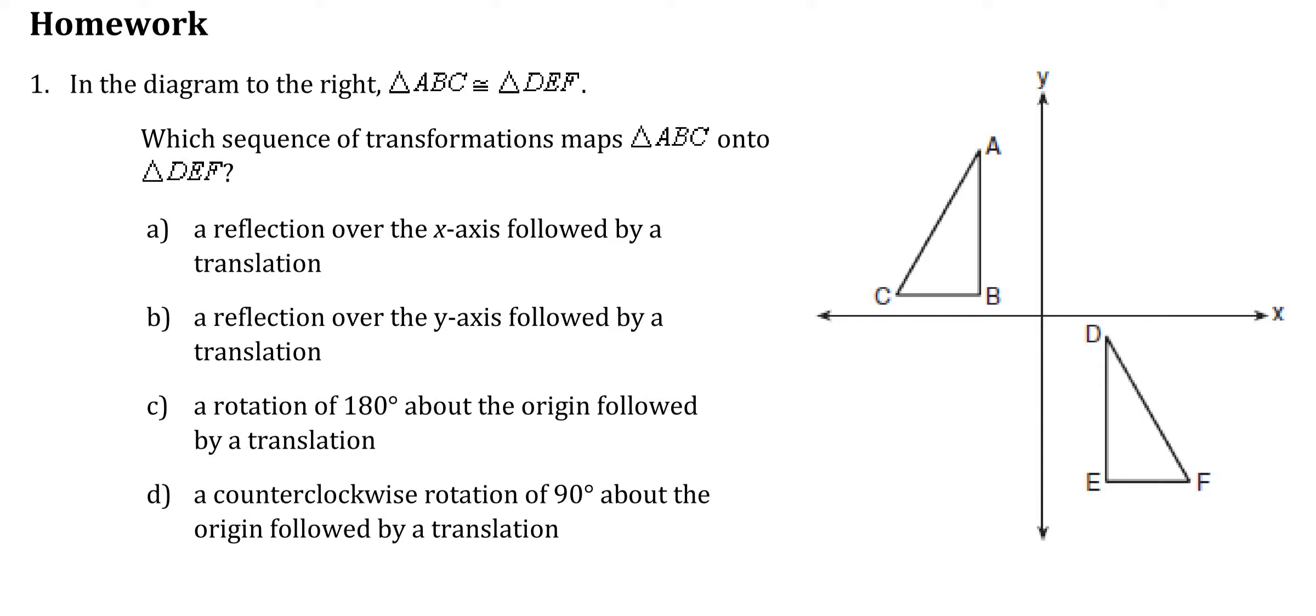Let's take a look at number one. This was actually a regents question. For number one, first thing I noticed is that the orientation is different. If I go from A to B and D to E, they're going in opposite directions. This is rotating around in this way, this is rotating around this way, meaning I need to have a reflection. So right away, choice C and choice T don't matter.